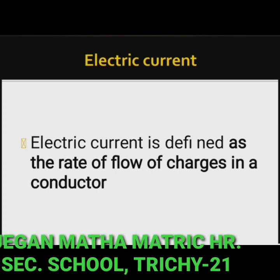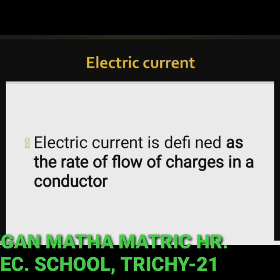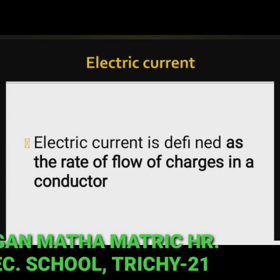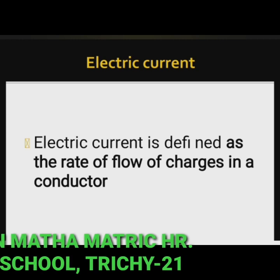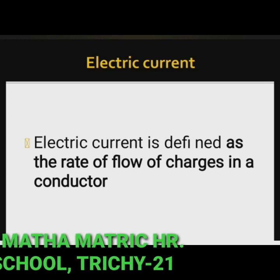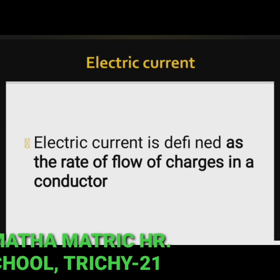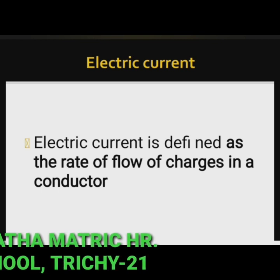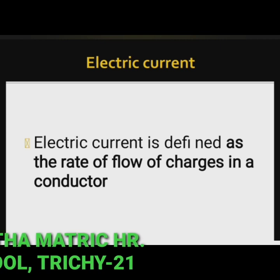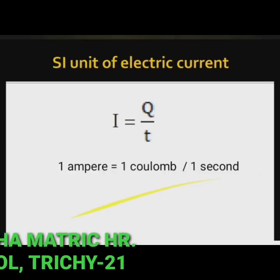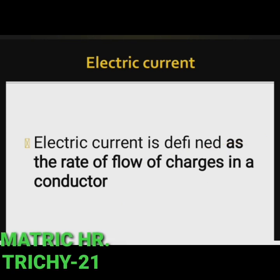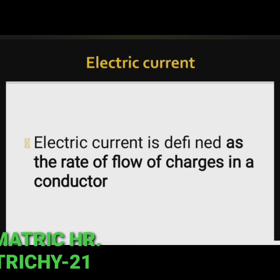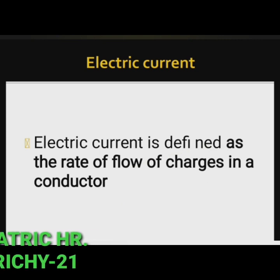Electric current: the motion of electric charges through a conductor will constitute an electric current. This is similar to the flow of water through a channel, or flow of air from a region of high pressure to a region of low pressure. In a similar manner, the electric current passes from the positive terminal, that is higher electric potential of a battery, to the negative terminal, that is lower electric potential, through a wire.